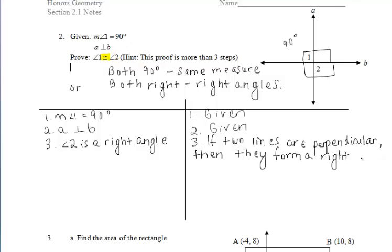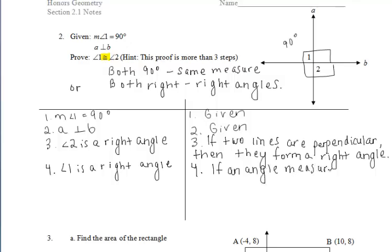I mentioned that angle two is a right angle. So now I have to mention that angle one is also a right angle. So then we can say that those two angles are congruent. Is angle one a right angle? Yeah, because we're given that the measure of angle one is 90 degrees. So we can then say that angle one is a right angle because if an angle measures 90 degrees, then it is a right angle.